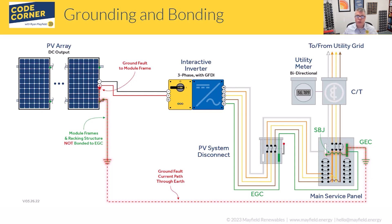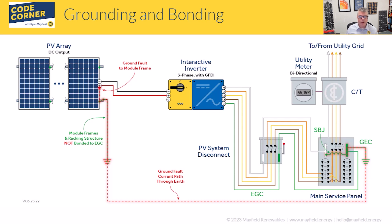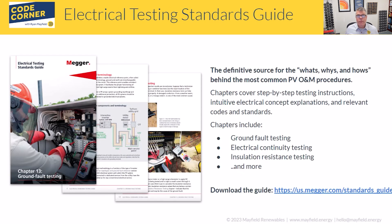This is a key high-level distinction: yes, the racking system may be grounded — it's in contact with the earth — but it is not bonded back to all of the other equipment. That bonding back to the equipment is what's really critical, and it's something that comes up often when talking with people about grounding versus bonding.